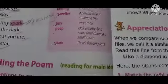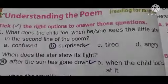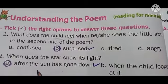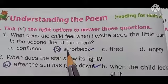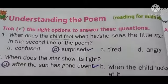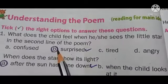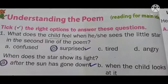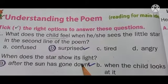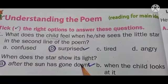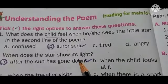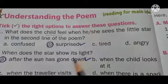Wonder means what, dear children? What does the child feel? How is the child feeling about the stars? Wandering means — confused, surprised, tired, angry — which one is correct? Surprise. The child is watching the stars very surprisingly. Wandering means the child wants to know about the stars, how it looks very beautiful. The child is surprised to see the little twinkling stars.